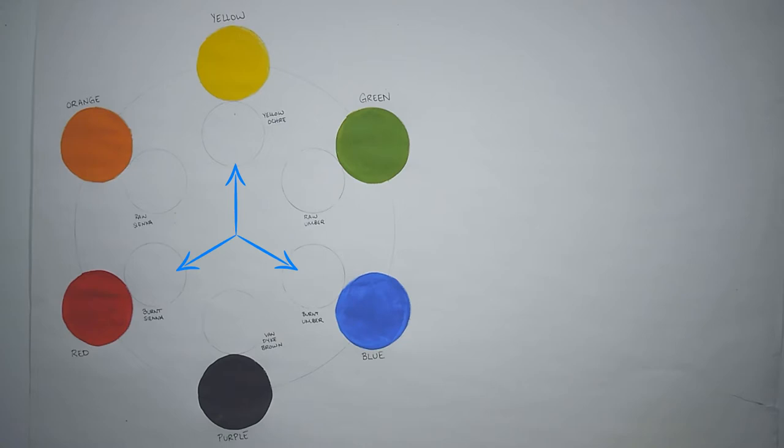For example, to mix burnt sienna, you start with red and add in yellow and blue. From the base color, you mix in the colors that form a triad.